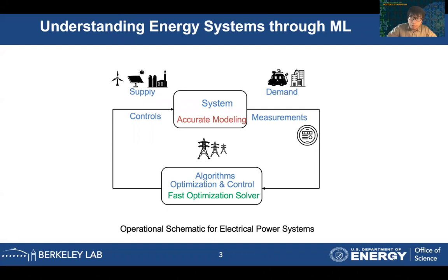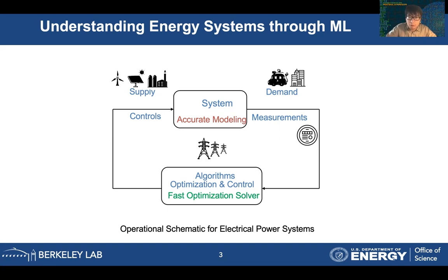For this large-scale power system, we definitely have two sides: the supply side and the demand side. As today's systems are becoming more and more carbon neutral, there are more renewables integrated in the system. From the supply side, we will have more stochastic signals coming from solar and wind generation, and we get all the sensor measurements and PMU measurements from both supply and demand sides.